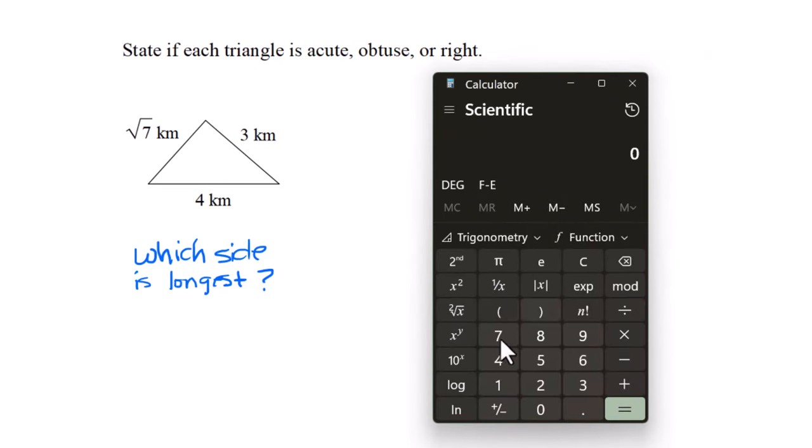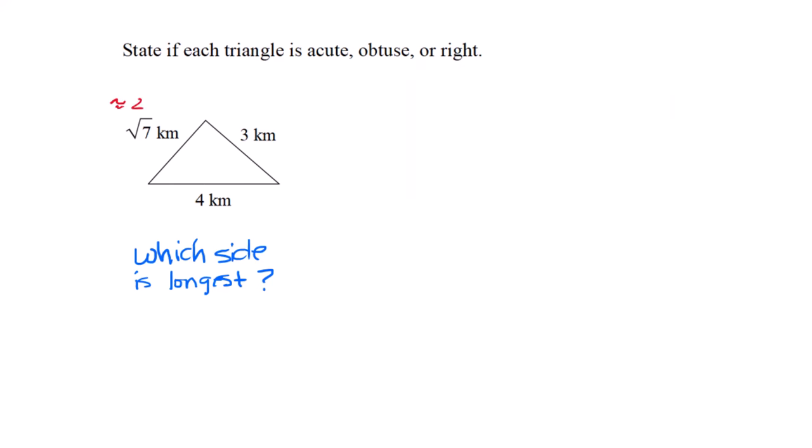The longest side is c. The square root of 7 is about 2.6, so 4 is the longest. C squared is 4 squared, a squared plus b squared is root 7 squared plus 3 squared. 4 squared is 16, root 7 squared is 7, 3 squared is 9. 16 equals 16. This is a right triangle.